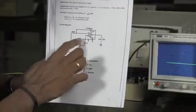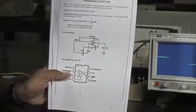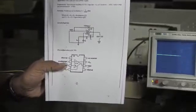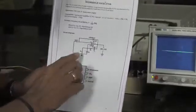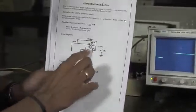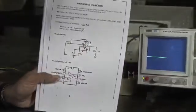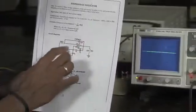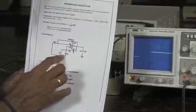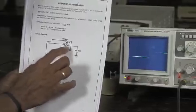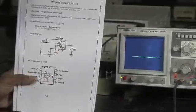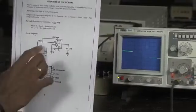This is the feedback network which provides oscillations. Now in this circuit we can see that there is a parallel combination of resistor and capacitor, and there is a series combination of resistor and capacitor.